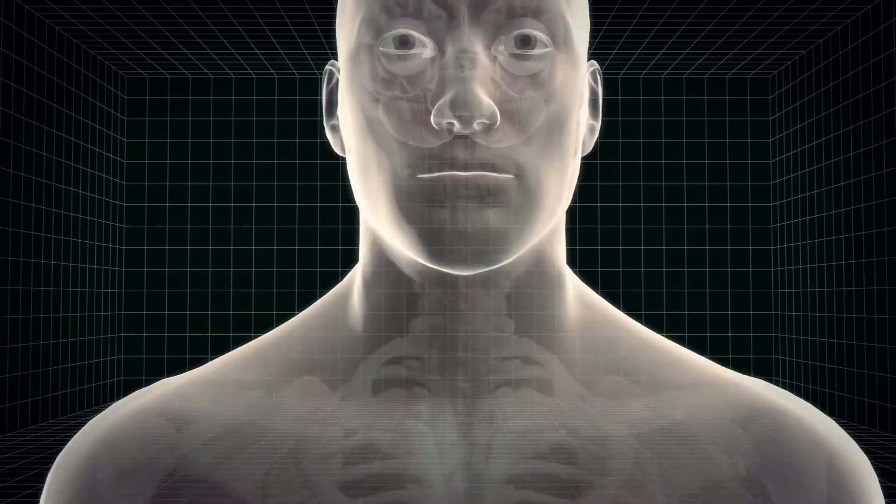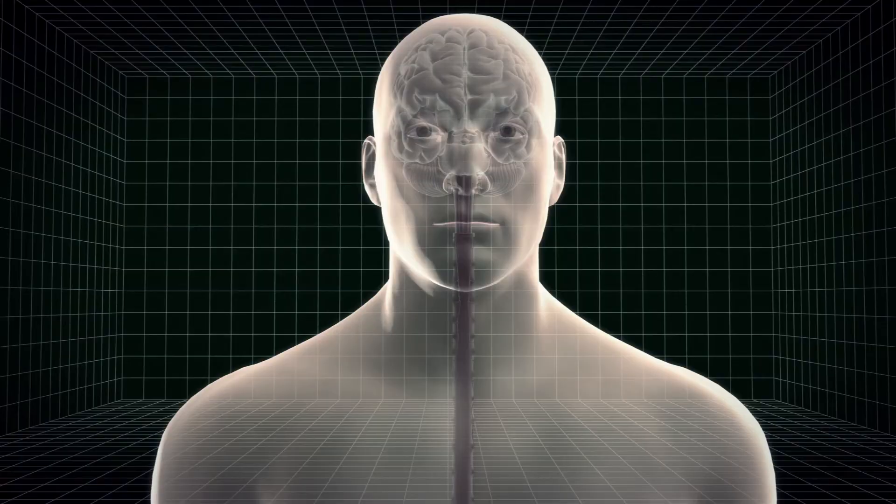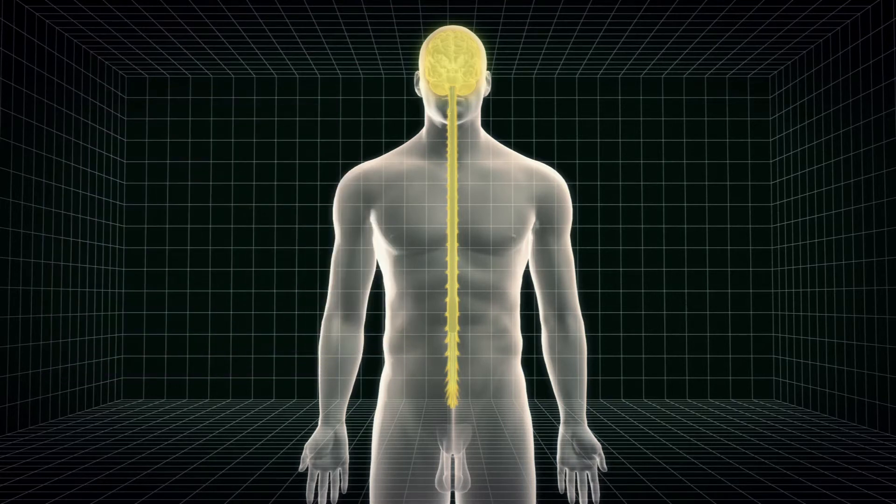Motor neurons control voluntary muscle movement. Upper motor neurons in the brain run down the brainstem and spinal cord where they connect with lower motor neurons. Lower motor neurons branch out to muscles throughout the body.